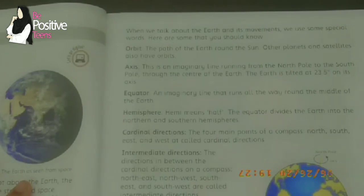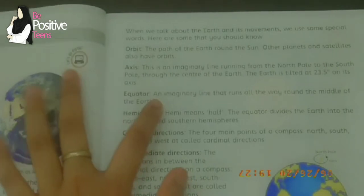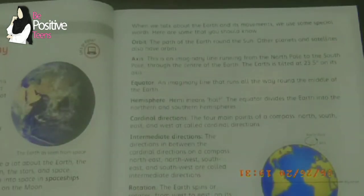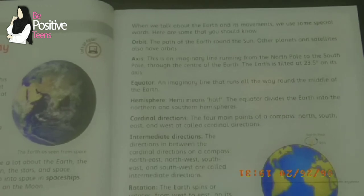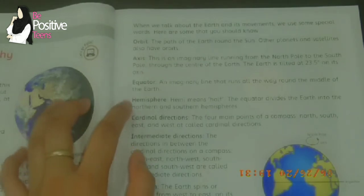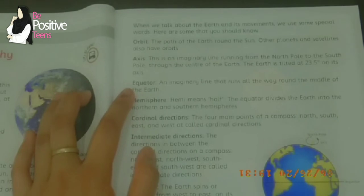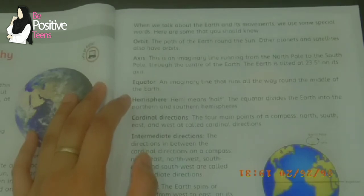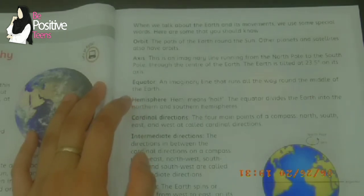Next is equator — an imaginary line that runs all the way around the middle of the earth, separating it into two parts: north and south. Next is hemisphere. 'Hemi' means half. The equator divides the earth into the northern hemisphere and the southern hemisphere. After the separation, each part is known as a hemisphere.